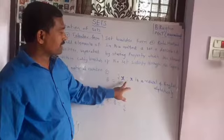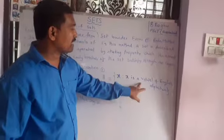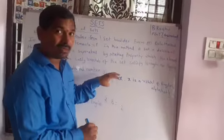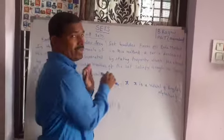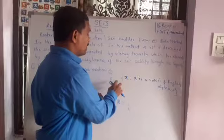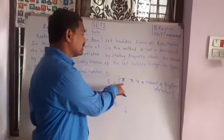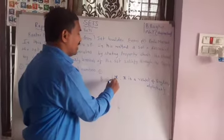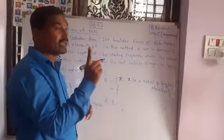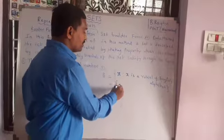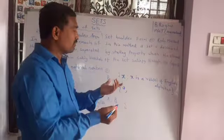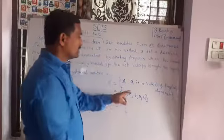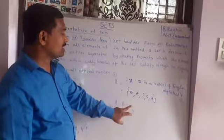For the set of vowels of the English alphabet, we write: X such that X is a vowel of the English alphabet. Here, X is not listed directly — X indirectly denotes the elements. What is X? X is a vowel. The vowels are A, E, I, O, U — so X equals A, E, I, O, or U. This is the set builder form, and the other notation is the roster form.